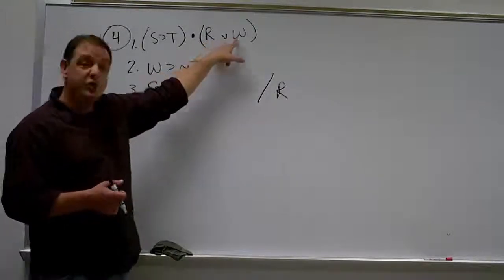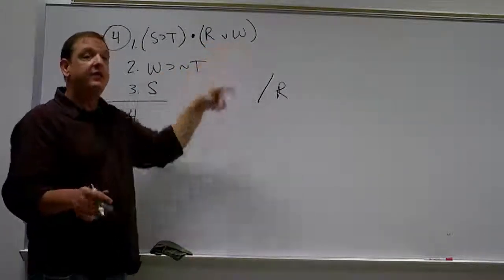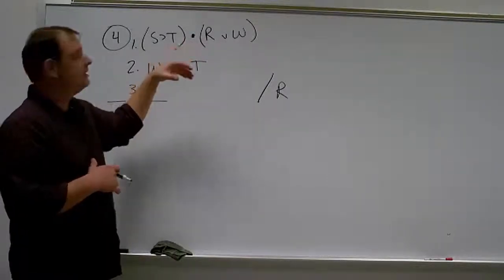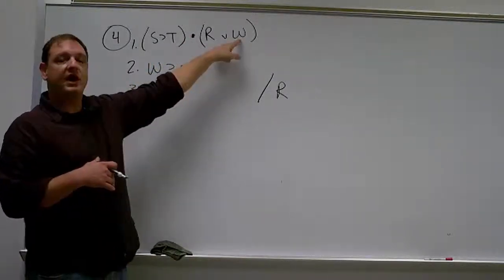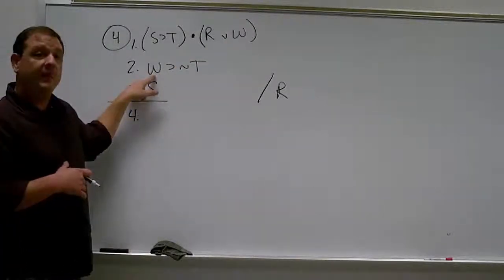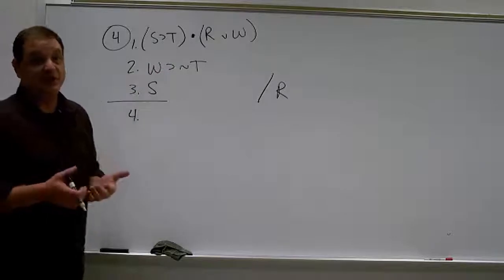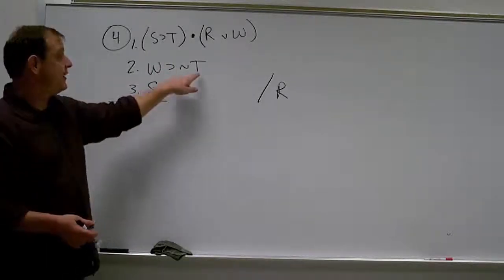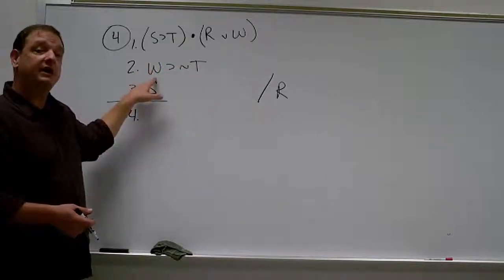If we knew that W was false, then we could use disjunctive syllogism to conclude the other half of this disjunctive statement. All right. So we're going to have to show that W is false. Well, here's another W. We don't know from this that it's false. But modus tollens, if we can show that this is false, then we can conclude that that is false.